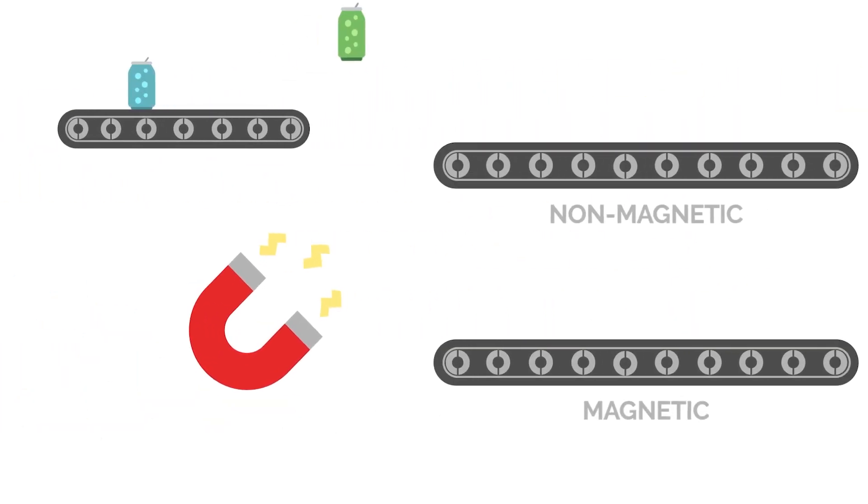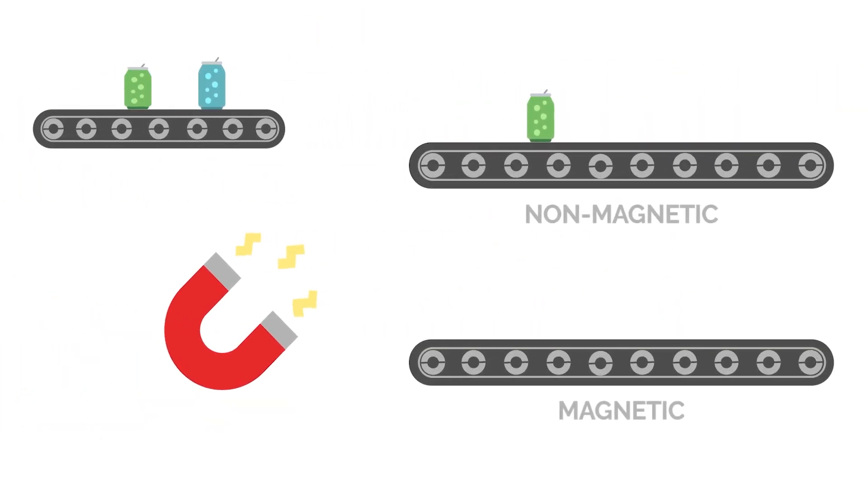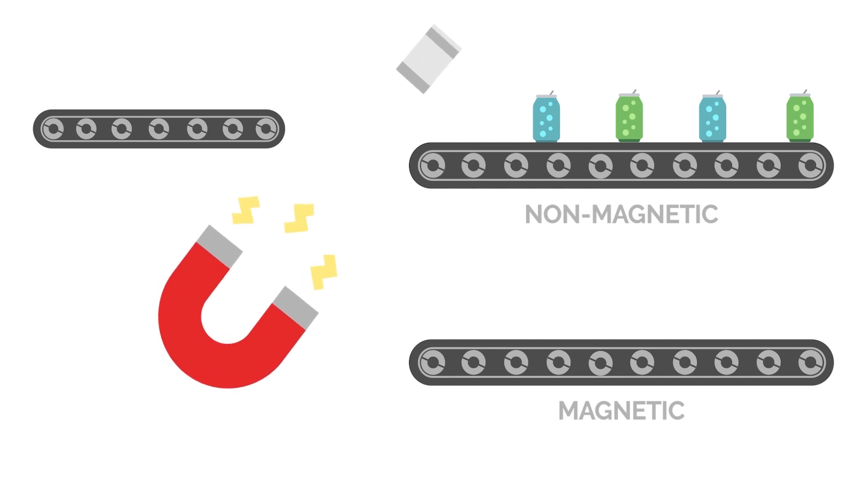Now let's talk metal. When recycled metal arrives for sorting, it's separated into magnetic and non-magnetic materials using a large rotating magnet before being baled. Items like soup cans have a high iron content and will be attracted to the magnet, while aluminum beverage containers will pass through.